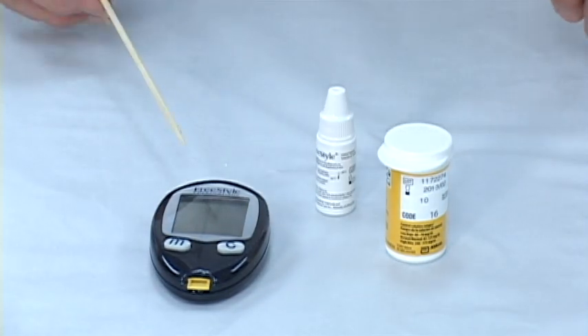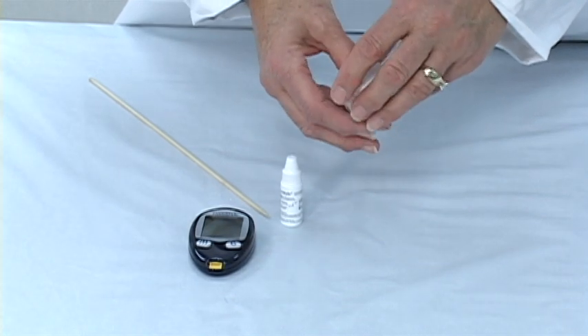You should use the glucose control solution that came with your meter whenever you open your vial of strips. Strips are very sensitive to temperature and moisture, so if you find that you left your strip vial open, you need to test with the glucose control solution. And if your blood sugar readings are not where they have been for the past few times, then use the glucose control solution.